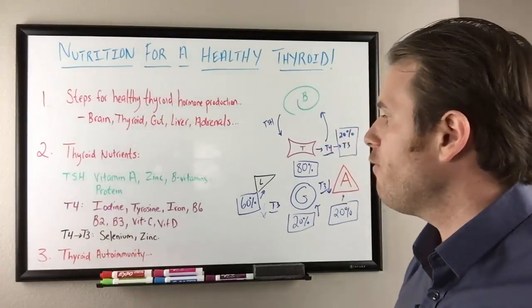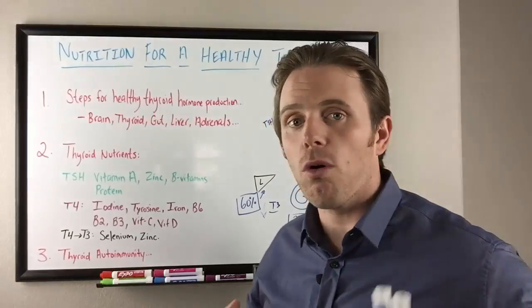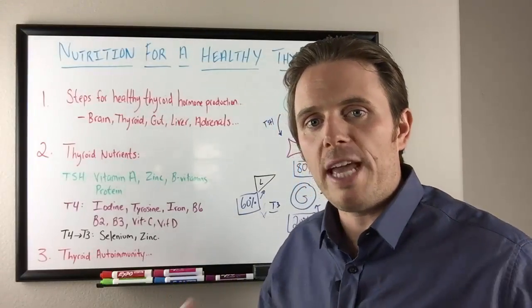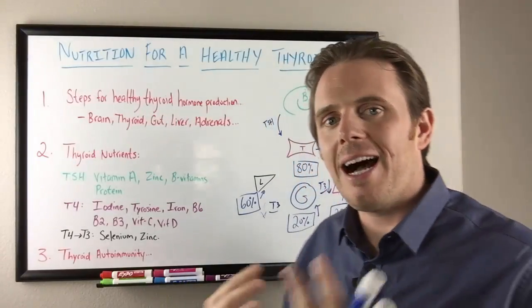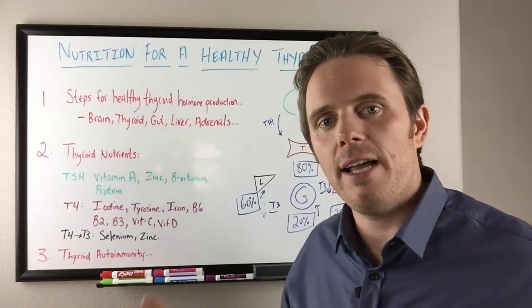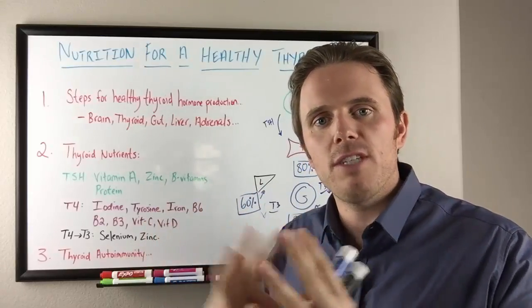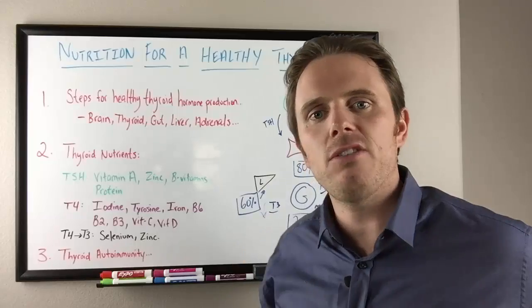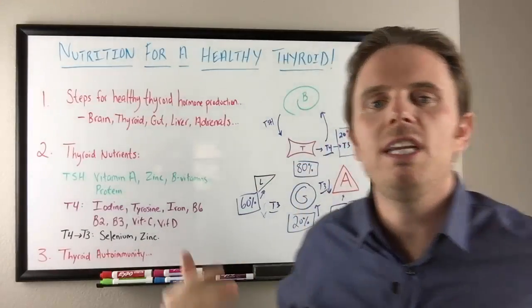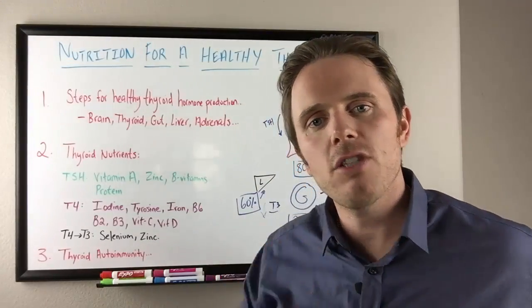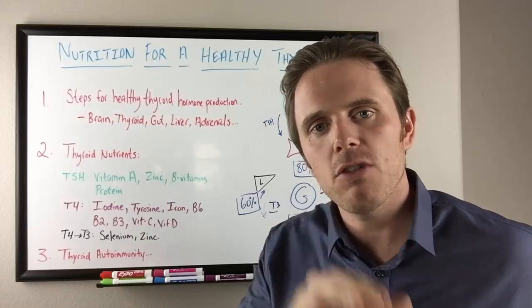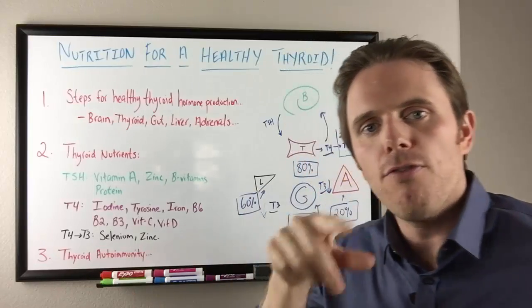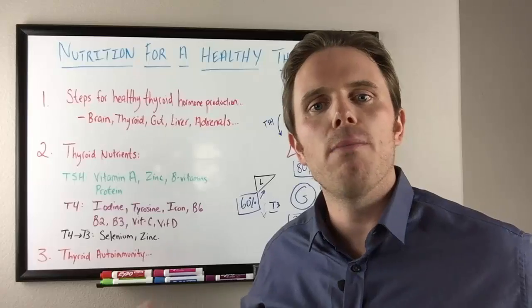Next is T4. Iodine is an important nutrient for thyroid hormone creation. The process known as iodination involves iodine and tyrosine being cleaved together. The T actually stands for tyrosine in T4 or T3. Not thyroid, but tyrosine. That's an amino acid. And the four and the three stand for the number of iodines.